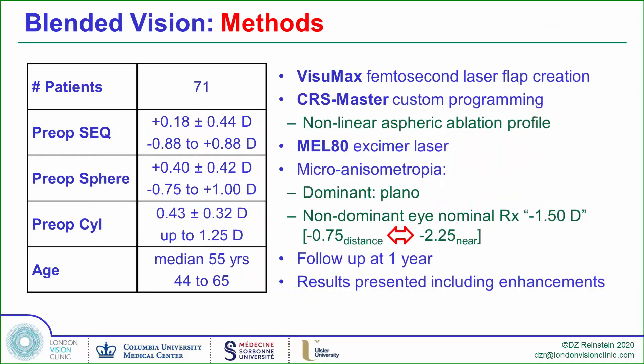These are the results of our published study on plano-presbyopic patients, using the CRS Master Platform for programming Presbyond profiles that induce a 1.5-diopter depth of field in each eye. The dominant eye is set to plano, providing distance vision as if plano and intermediate vision as if the eye was minus 0.75, while the non-dominant eye is set to a nominal refraction of minus 1.50, giving a depth of field providing distance vision as if the eye was minus 0.75 and near vision as if the eye was minus 2.25.